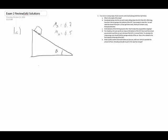If we do a free body diagram of this car, we have gravity, the normal force, and then friction holding it up. The way you can tell what direction the force of static friction goes is to get rid of the friction and see which direction the object would move. In this case, the car would slide down the hill, so friction is pushing up the hill.